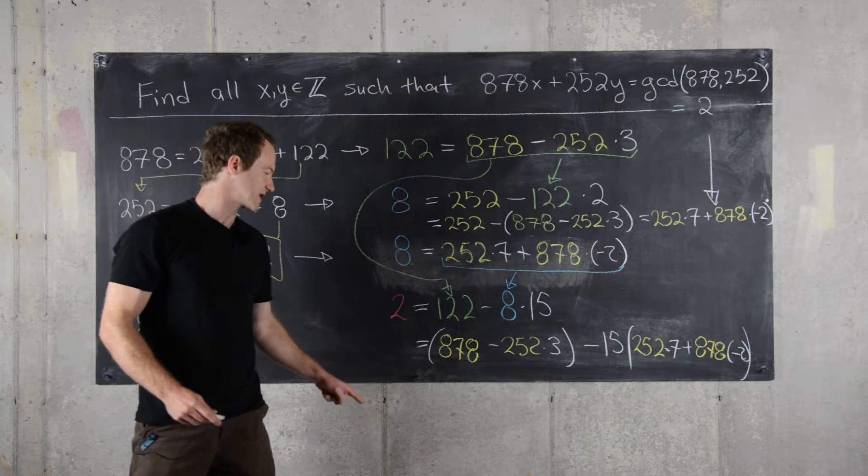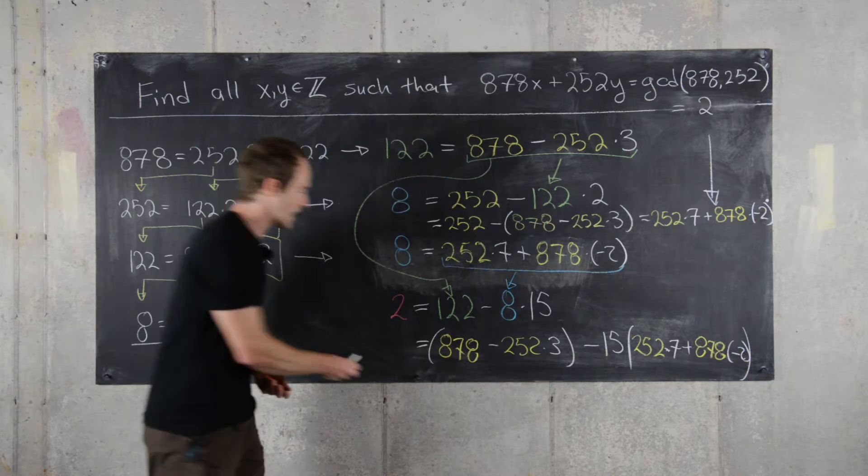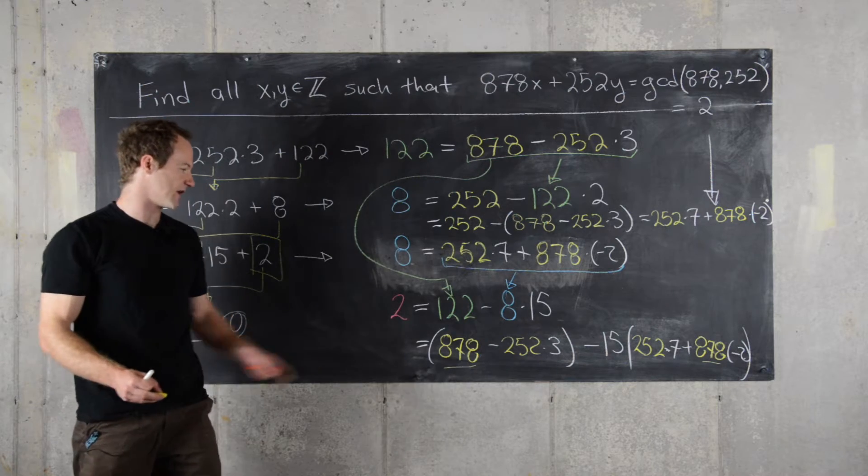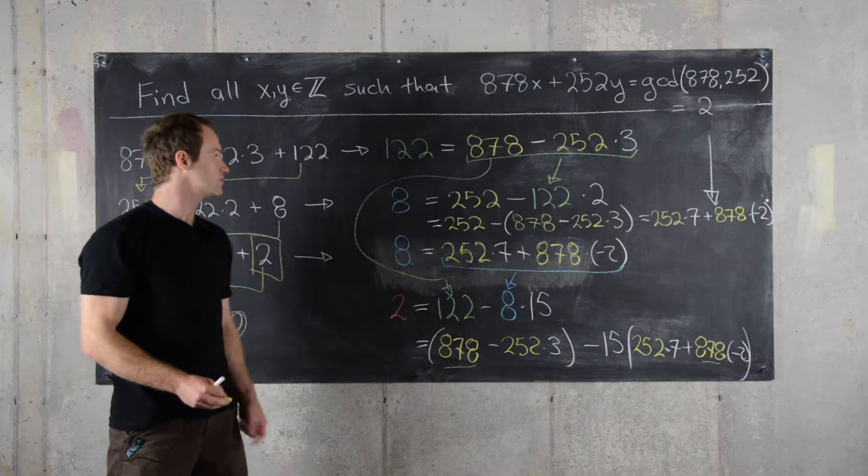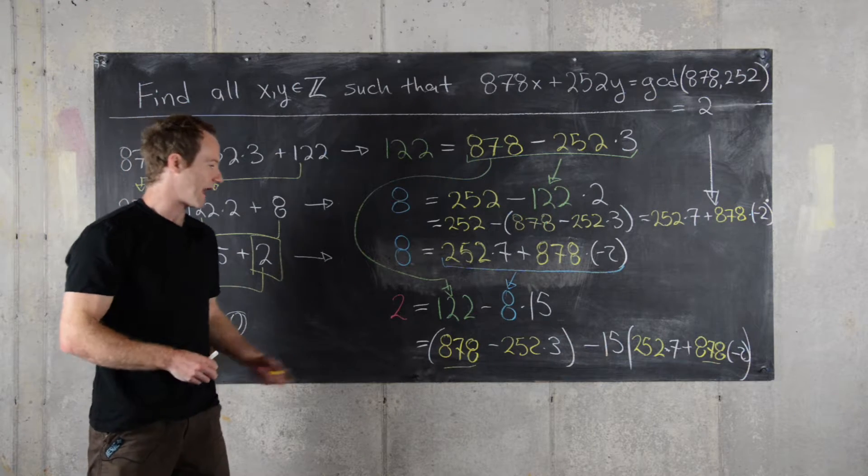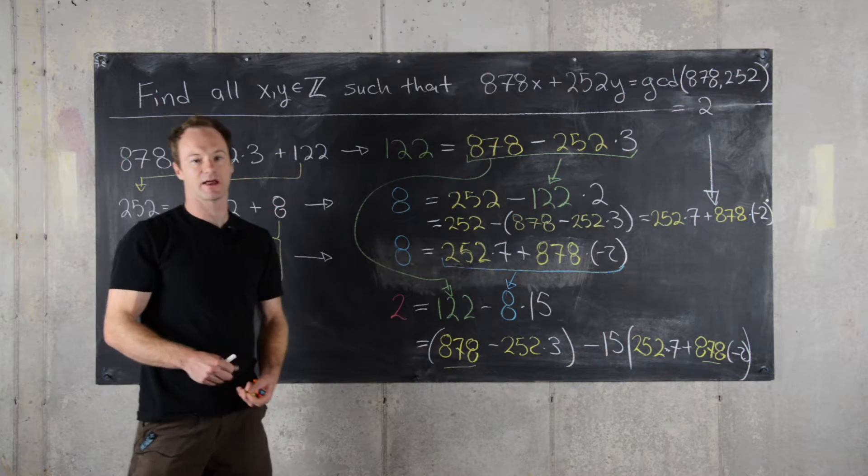So now all we have to do is combine like terms where we're thinking of 878 as a like term with itself and 252 is a like term with itself, and then we'll have a solution for this equation. So I'll clean up the board, and I'll jump to the point where we combine like terms.